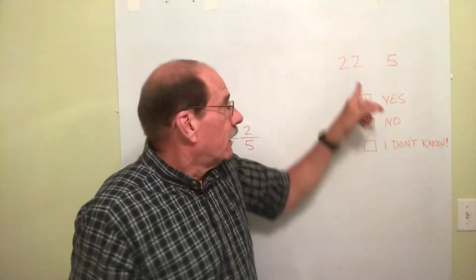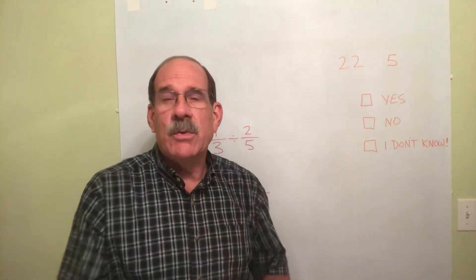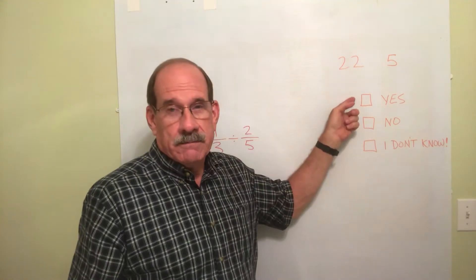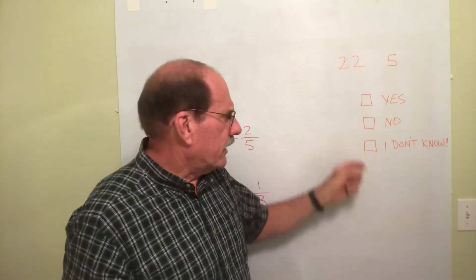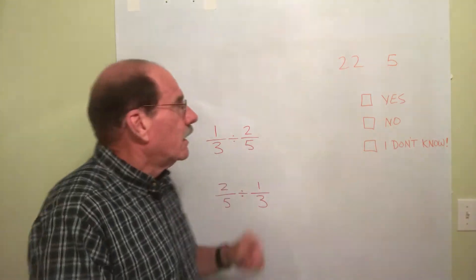What if you were dividing? 22 divided by 5 versus 5 divided by 22. Does the order matter? Yes. Anybody answer I don't know any of those? Okay. I don't see any hands out there. That's good. Yeah, the order matters.